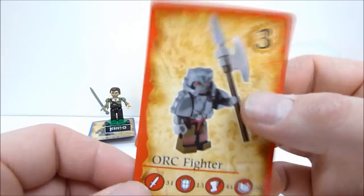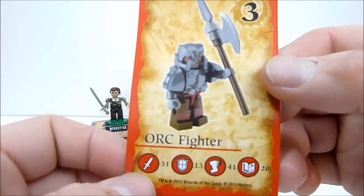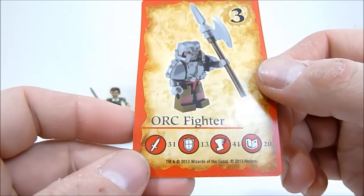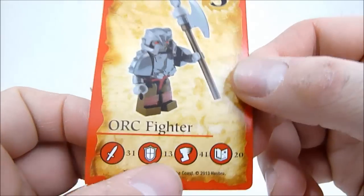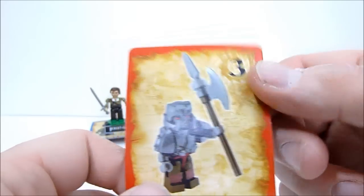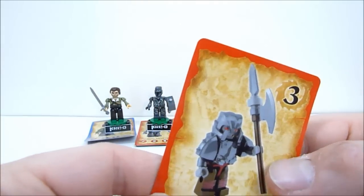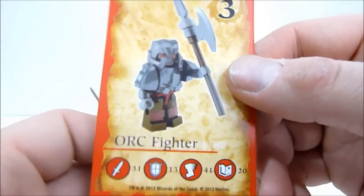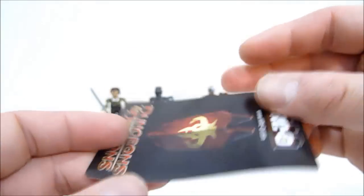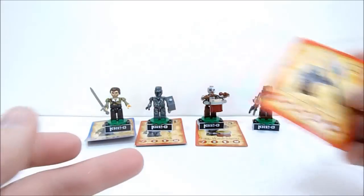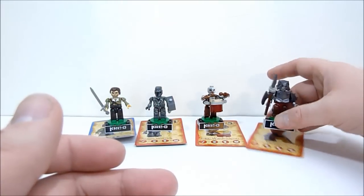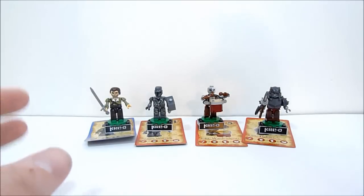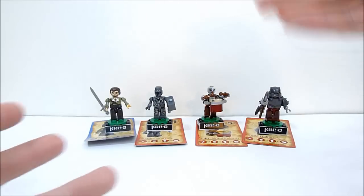Each of them comes with this little card, or a different card depending on who it is. I'm not sure what this number is exactly, but maybe it's like a point system where you have to pay a certain amount of points to get a certain character. These are their stats down here: attack, defense, all that stuff. Each of them comes with this little card so you can use that to start a new game or use it in an existing one.